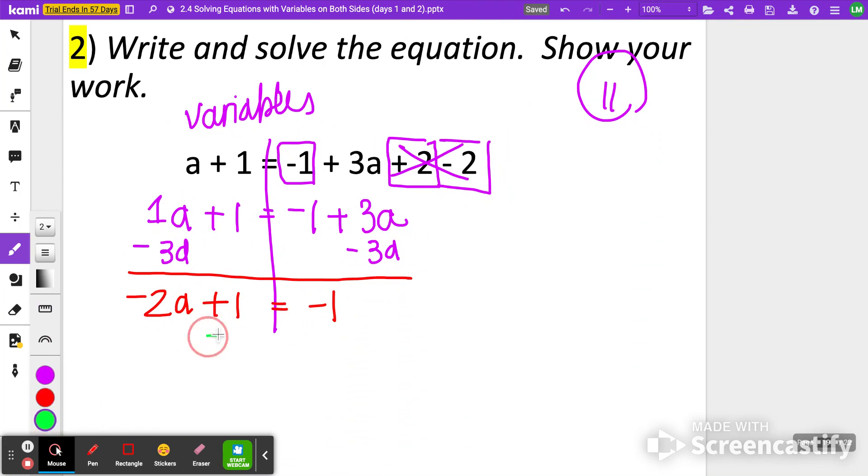Then I'm going to do subtracting 1 from both sides. I get negative 2a is equal to negative 2. Final step, dividing both sides by negative 2. Negative 2 divided by negative 2 is a positive 1. So a is equal to 1.